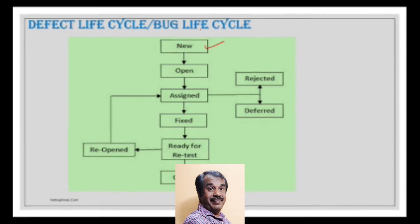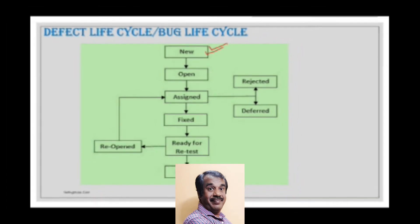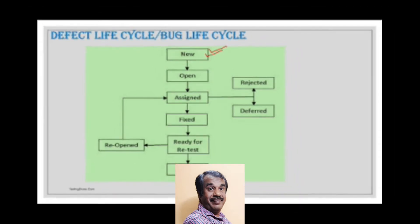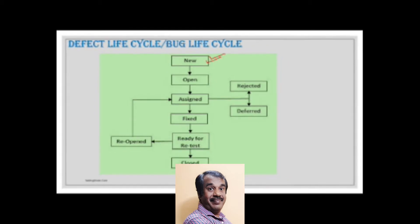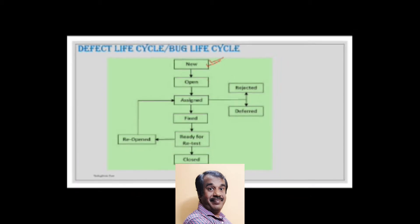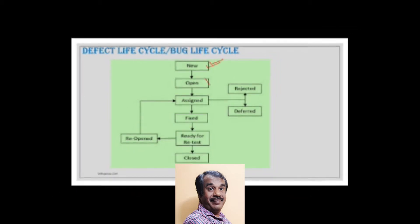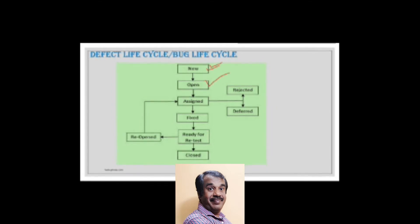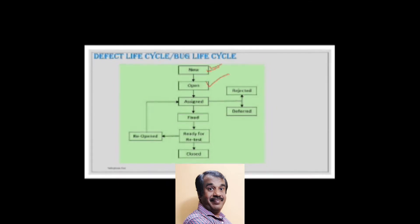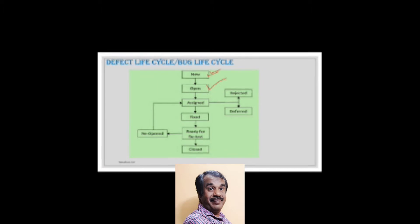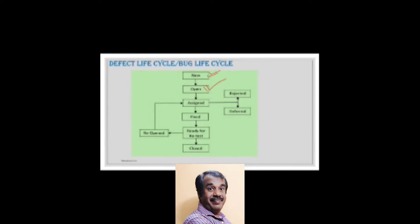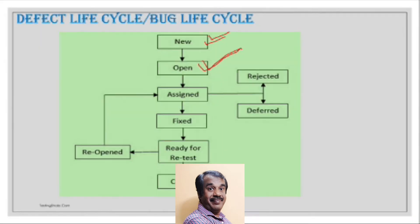Your test lead or a senior team member validates all the information and checks whether it is a valid defect. Once confirmed by the test lead, the defect is assigned to someone in the development team, and it moves into Assigned status.